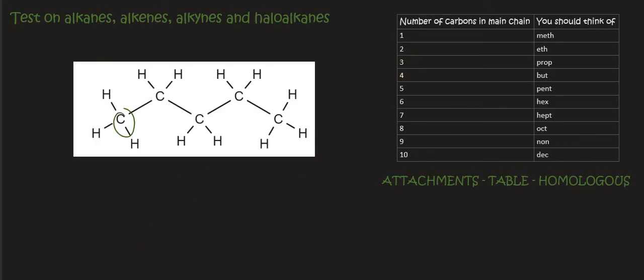With this one we look at how many carbons. That's five and so that's pent. We then look at what type of molecule it is. It's an alkane so we just say pentane and then we look for any attachments. We don't see any and so that is called pentane.